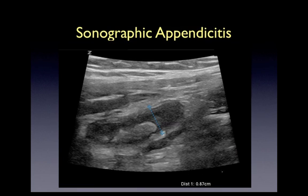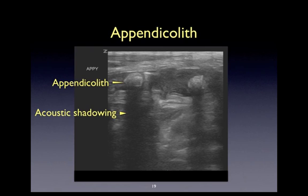This is another example of appendicitis where the sonographer is measuring in long orientation. You can clearly see the blind-ended structure and a very thick appendicolith within the lumen of the appendix. In this very interesting and rare occurrence, there is the presence of two appendicoliths. Both of them demonstrate the classic features of a very bright, echogenic appearance sonographically, and the appearance of posterior acoustic shadowing.